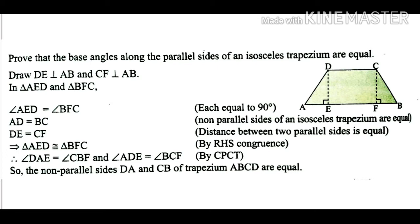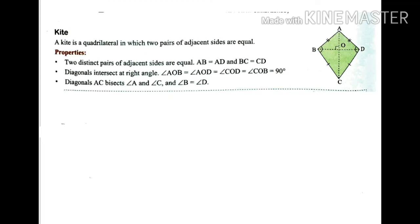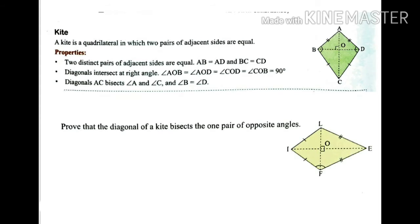The next type is the kite. A kite is a quadrilateral in which two pairs of adjacent sides are equal. In the figure, AB = AD and BC = CD are the two distinct pairs of adjacent sides. Looking at the diagonals AC and BD, they intersect such that each angle at the center — AOB, AOD, BOC, and COD — equals 90°. Diagonal AC bisects angle A and angle C into two equal parts.